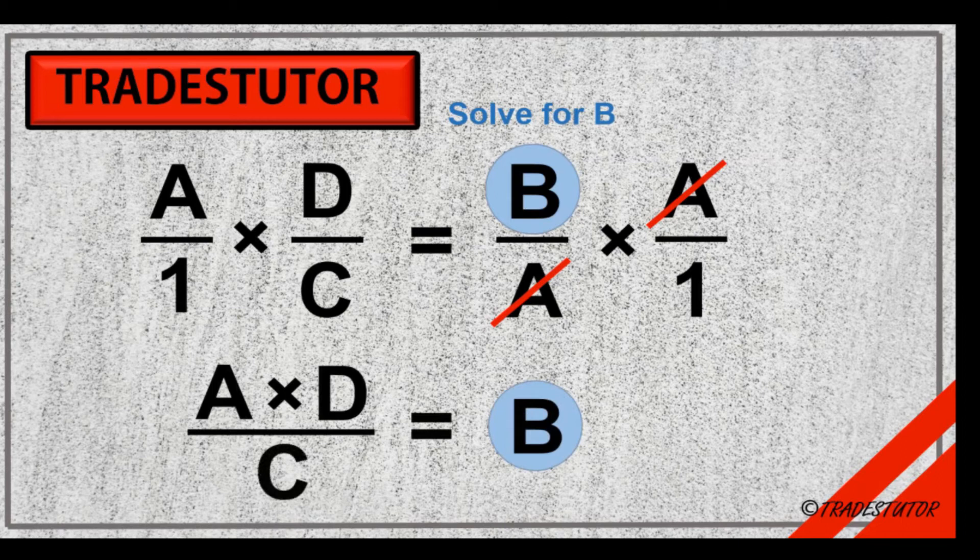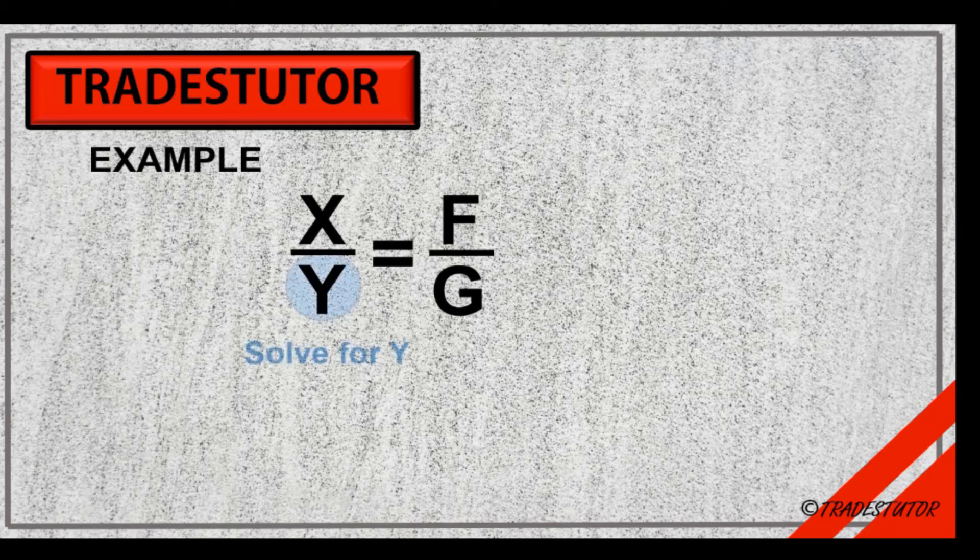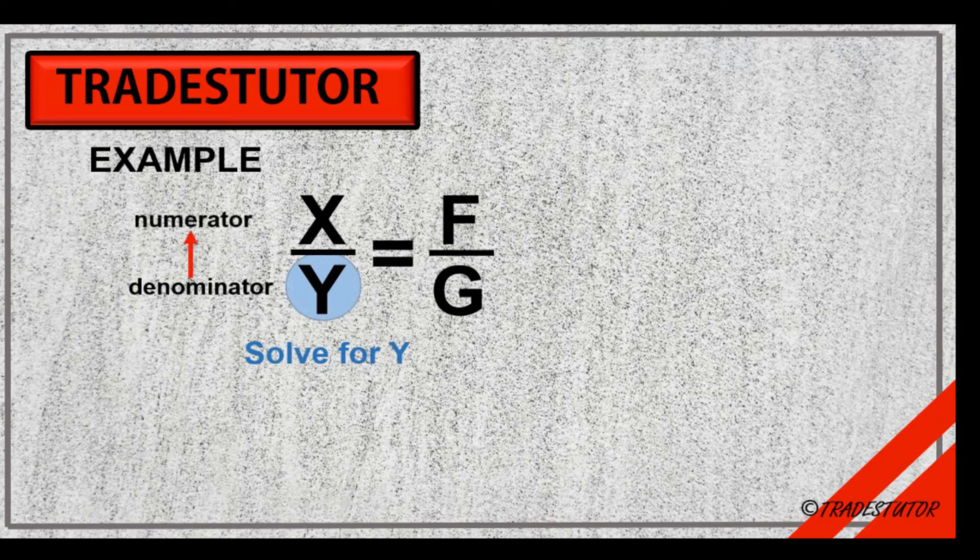So we've taken an equation, isolated one variable, and that's the one we want to solve for. Let's try another example. X over Y equals F over G, and in this case, we'll solve for Y. This poses another problem, because Y is down in the denominator, and in order for this to work, what we want to get is Y and move it up to the numerator. So this is going to take a couple of steps. The first step is getting Y out of there, getting Y out of the numerator.